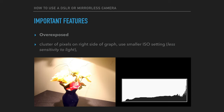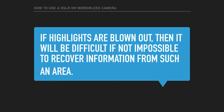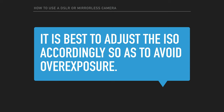If the image shows up on the histogram as a cluster of pixels on the right side of the graph, then the image is overexposed. Under this condition, you will need to use a smaller ISO setting. Lower ISO settings are less sensitive to light and will capture less light, so more light is needed for a good exposure. Lower ISO settings result in an image with less noise or grain. Conversely, higher ISO settings are more sensitive to light and will capture more light, meaning less light is needed for a good exposure, but the image will have more noise or grain. If highlights are blown out, it will be difficult or impossible to recover information from such an area. Adjust the ISO accordingly to avoid overexposure.